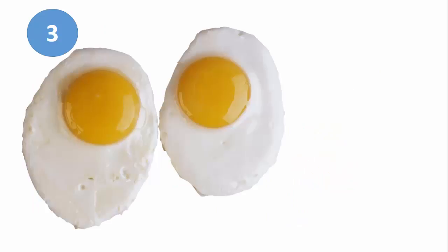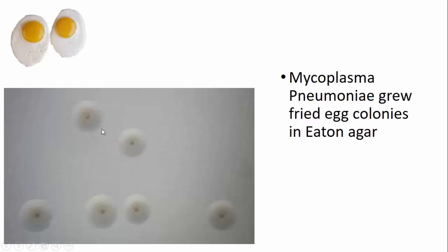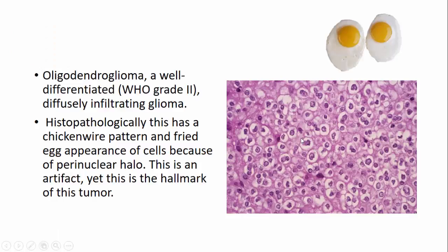The third one is a fried egg. There is a fried egg colony of Mycoplasma pneumoniae grown on Eaton agar in microbiology. In pathology, the fried egg appearance is compared to the histopathological features of oligodendroglioma.